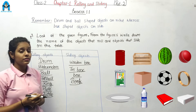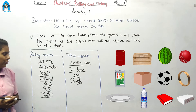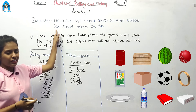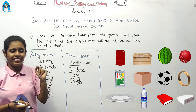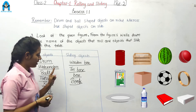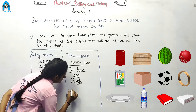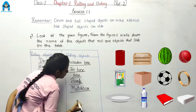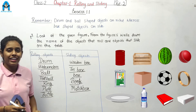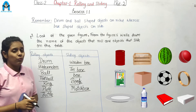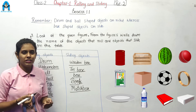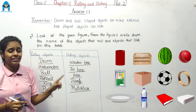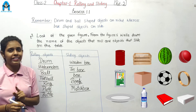This is a matchbox. Can matchbox roll or slide? The shape of matchbox is like a box, and box shaped objects can slide. So, matchbox can slide. We are writing matchbox on the sliding side. So, we have filled the table: some objects can roll and some can slide. Drum and ball shaped objects can roll, and box shaped objects can slide.